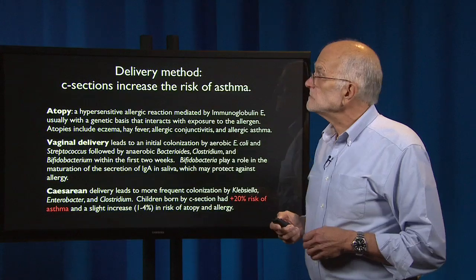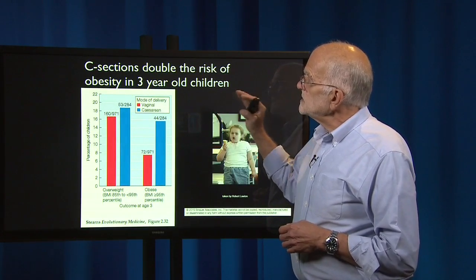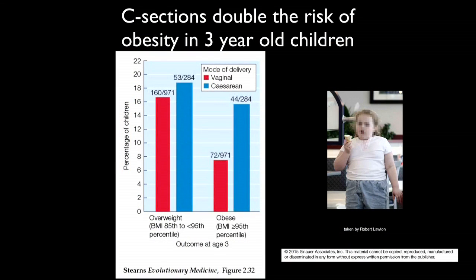Delivery method makes a difference. C-sections appear to double the risk of obesity in three-year-old children. Data show the percentage of children that were overweight and obese, comparing vaginal versus cesarean birth. Cesarean-born children have just about twice the risk of being obese as do vaginally-born children.